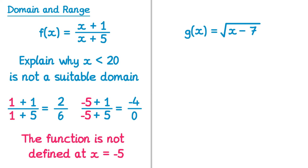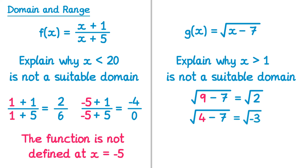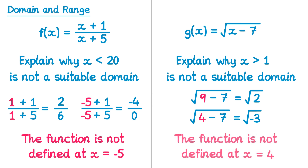Now we'll try another function: g of x equals the square root of x minus 7, and we need to explain why x greater than 1 is not a suitable domain. Try x equals 9: we get the square root of 9 minus 7, which is the square root of 2 — an acceptable output. But if x equals 4: we get the square root of 4 minus 7, which is the square root of negative 3. You can't square root a negative number, so the function is not defined at x equals 4. More generally, the function is not defined when x is less than 7, since that produces a negative number under the square root.